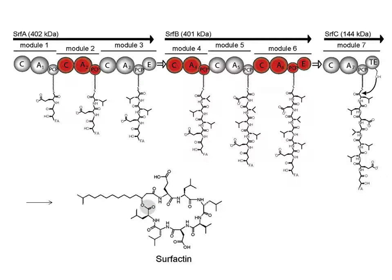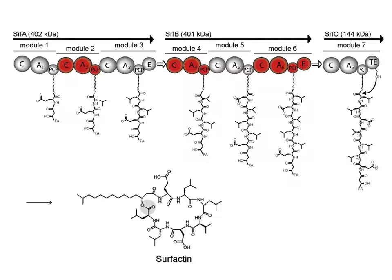Like type 1 polyketides, non-ribosomal peptides are organized as modules which are further organized as domains. Each module is responsible for choosing an amino acid and adding it to the growing chain. Each module typically has an A, PCP, and C domain.